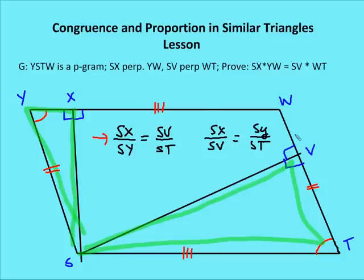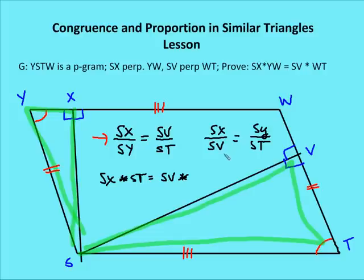Now I apply the means-extremes product theorem using cross-multiplication to rewrite this proportion. SX times ST is equal to SV times SY. Since SY is congruent to WT, I can replace SY with WT, giving SV times WT. And since ST is congruent to YW — because opposite sides of a parallelogram are congruent — I can replace ST with YW. That proves that SX times YW is equal to SV times WT.